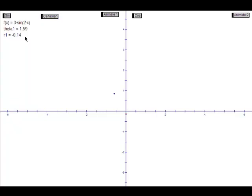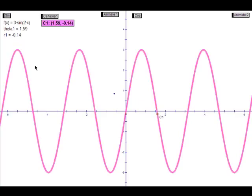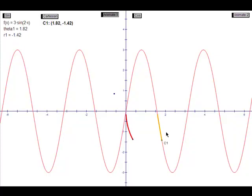If we graph the equation in its Cartesian form, we can see the sine wave. As we animate the point, we can follow the point moving along the Cartesian graph, and at the same time, its polar graph being graphed.